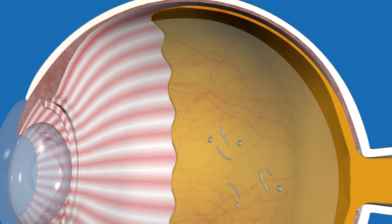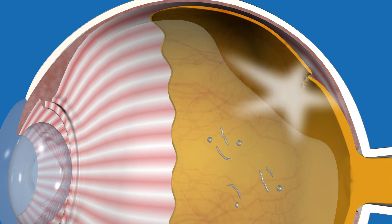Sometimes, when the vitreous tugs on the retina, it may cause you to see a flash of light. In rare instances, this tugging may result in a tear in the retina.